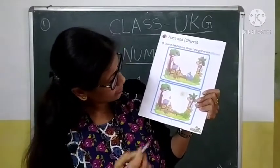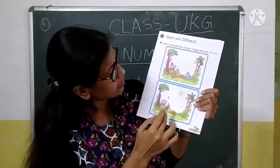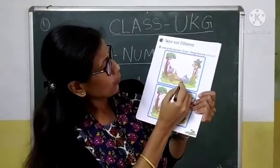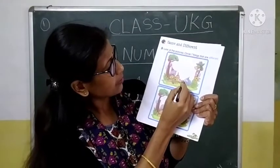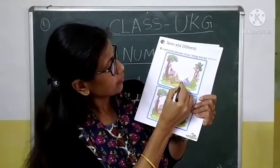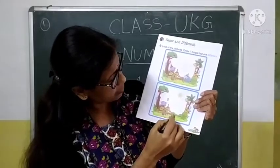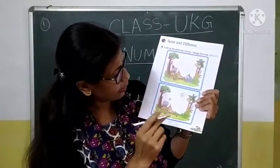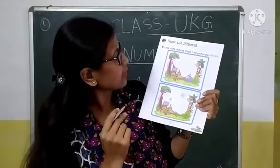Then see the different gifts. Here it is one gift, so circle the gift. Here no gift. That is different. We got three.